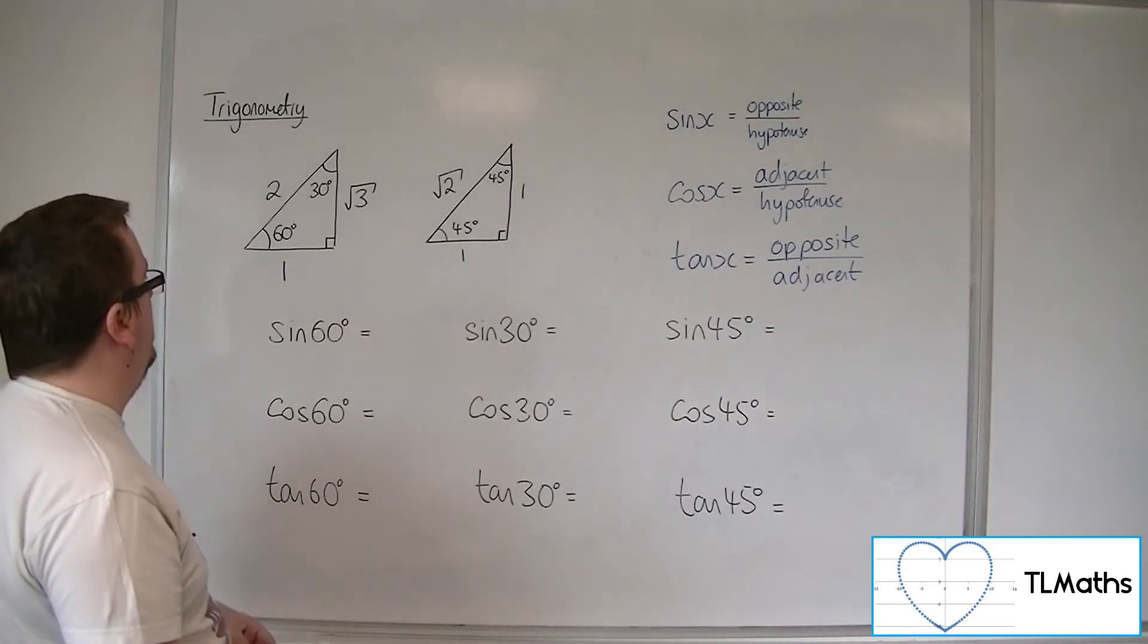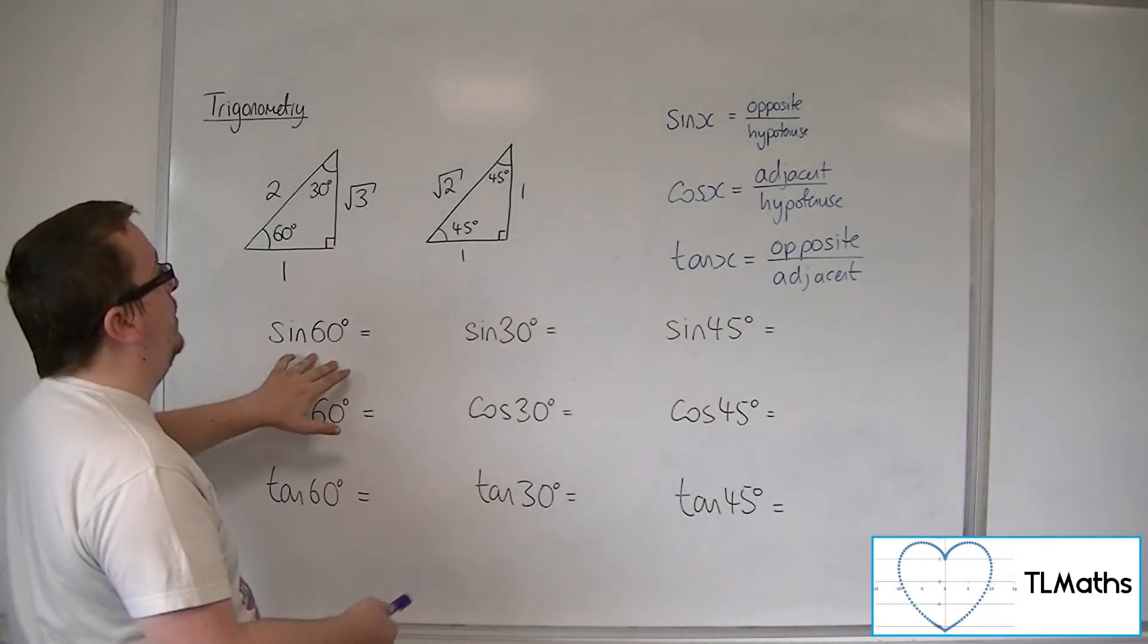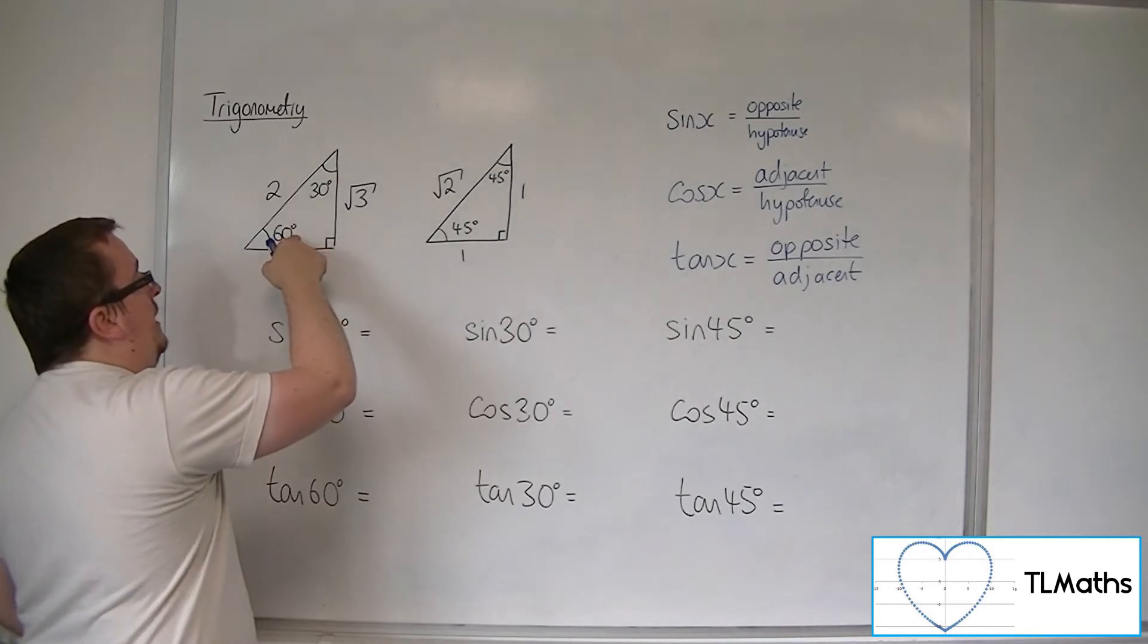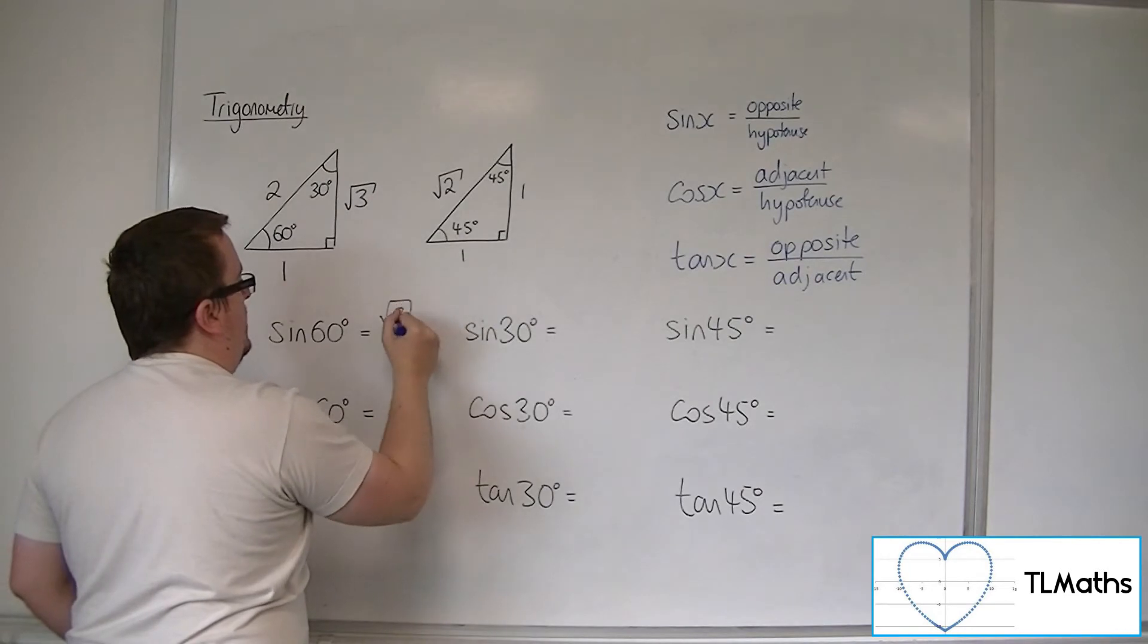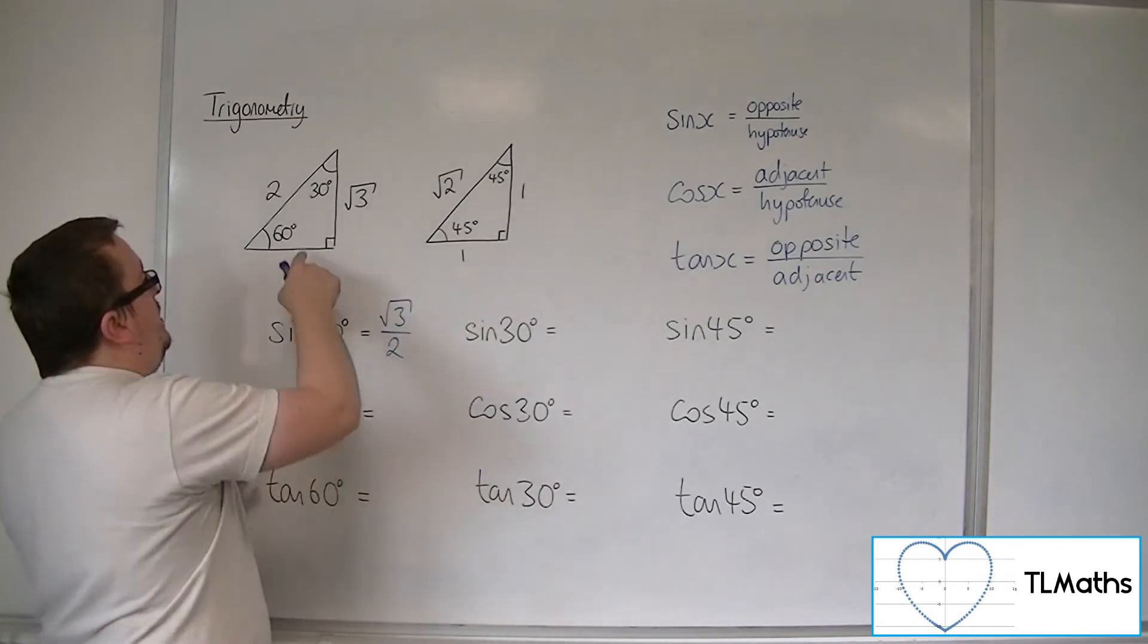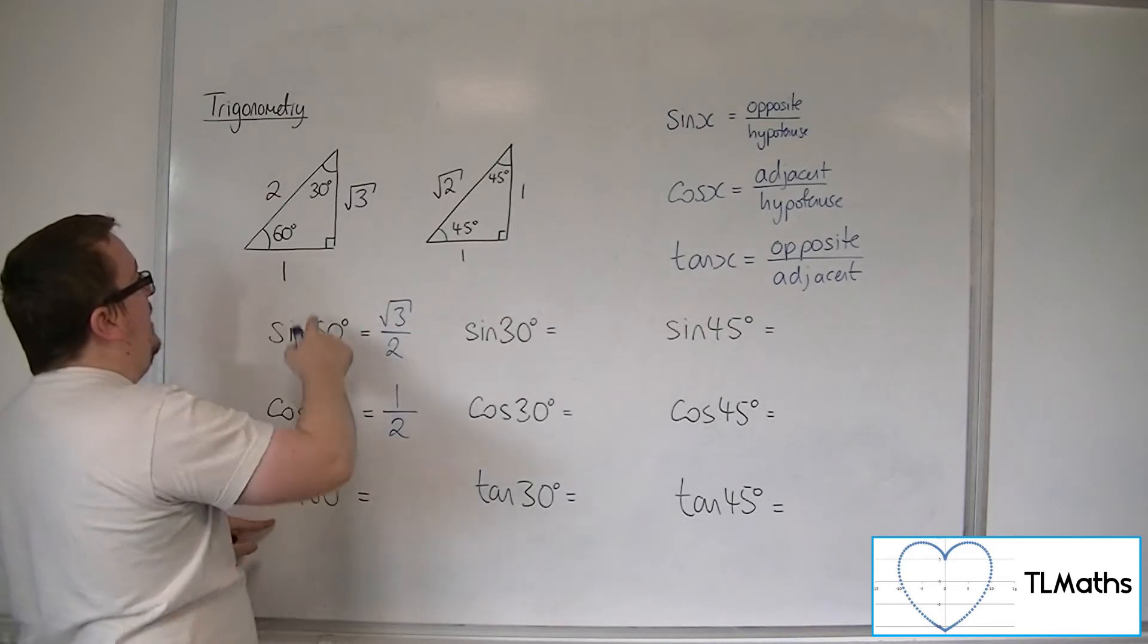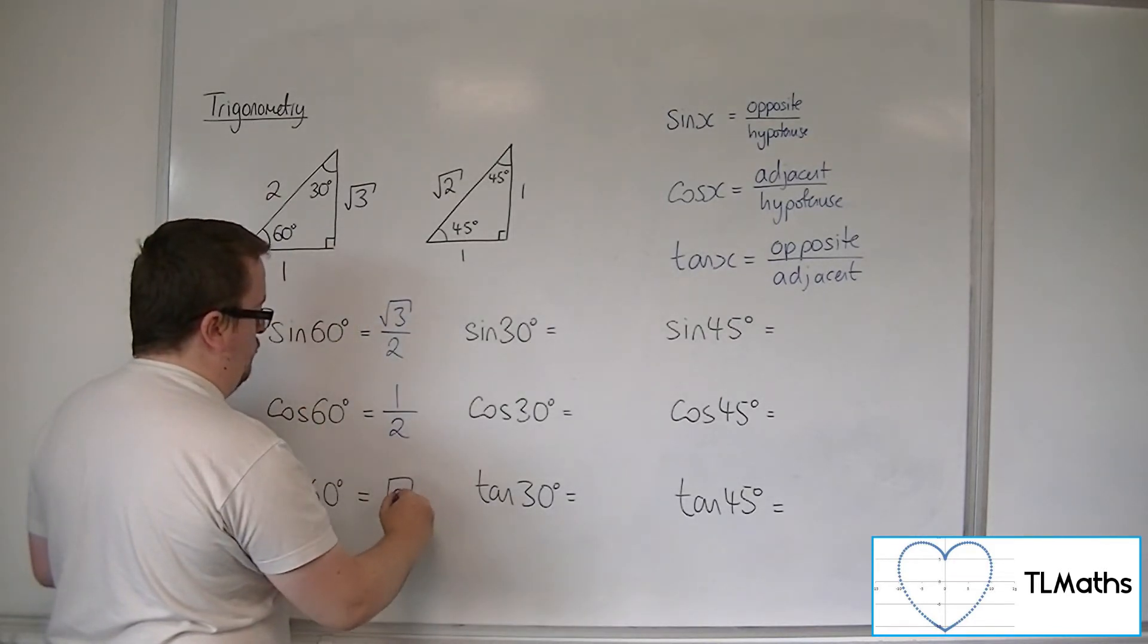So, using your SOHCAHTOA knowledge, the fact that we've got sine of 60 degrees means we've got to use the opposite over the hypotenuse. So looking at this triangle, sine of the angle 60 is the opposite over the hypotenuse, and so that is root 3 over 2. Cosine of 60 degrees uses the adjacent over the hypotenuse, so that's 1 over 2. Tan of 60 is the opposite over the adjacent, so root 3 over 1, so just root 3.